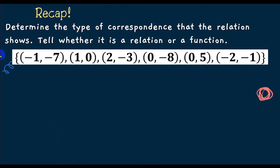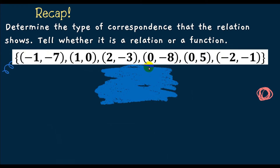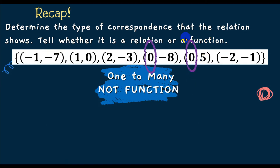Next, we have ordered pairs. We look at the x-coordinates: negative 1, 1, 2, 0, 0, negative 2. There is a repeated x value, which is 0, so this is one-to-many correspondence — not a function. When an x value repeats, the relation is a function no longer; it remains only a relation.